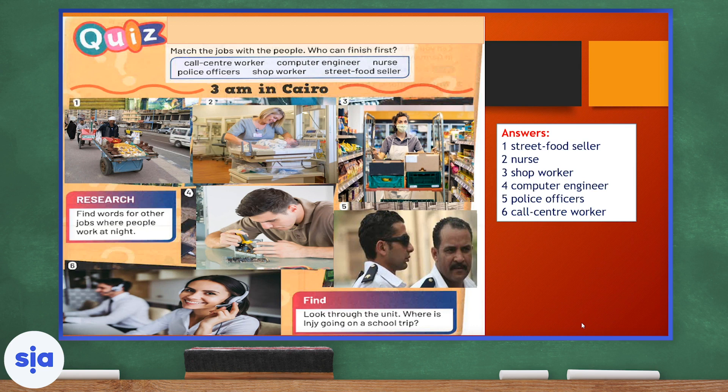I want you to research, find words for other jobs where people work at night. And then look through the unit. Where is Inji going on a school trip? Of course, Inji is going to Amman. So, the pictures you can see in this quiz show workers or people who have night jobs. Sometimes they work at night. Let's get started.